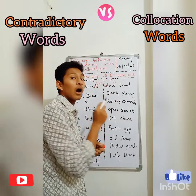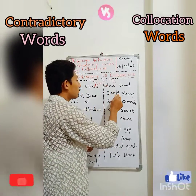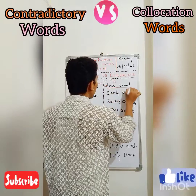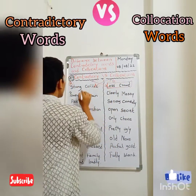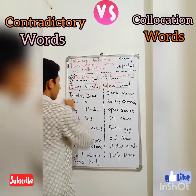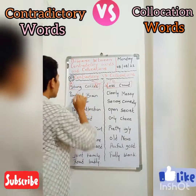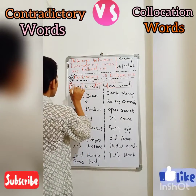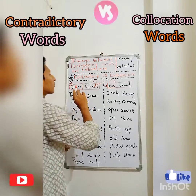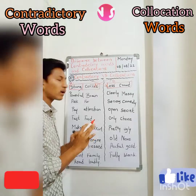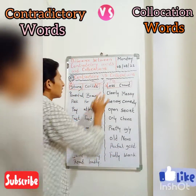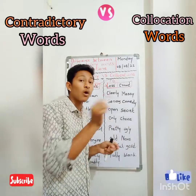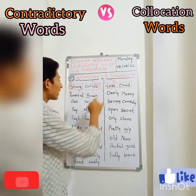Contradictories are different from collocations: in contradictories, two opposite words are there, while in collocations, two naturally framed pair of words are there which are not used interchangeably. You can't replace these words. Like 'strong coffee' — you can use 'strong tea,' but not 'powerful coffee' or 'powerful tea.' Only 'strong tea.' Similarly for contradictories, like 'less crowd' — you can't change them either. These are pair of words you have to use as they are, following grammar rules. Then only those will give the sense.